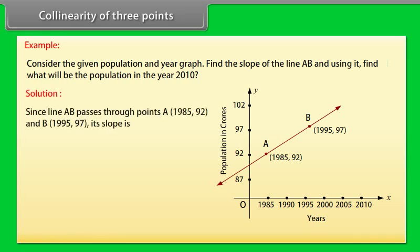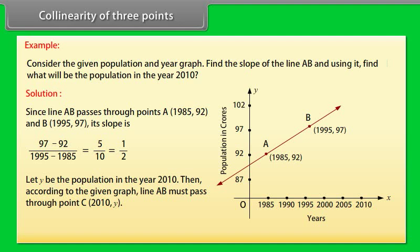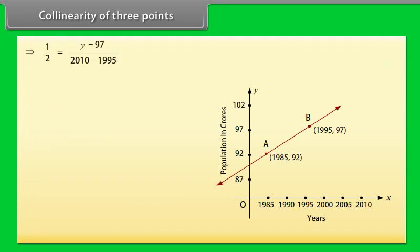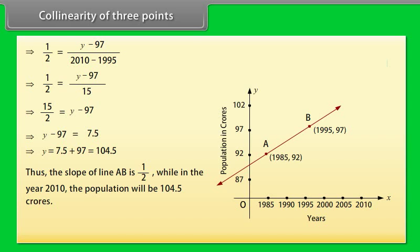Solution: Since line AB passes through points A(1985, 92) and B(1995, 97), its slope is (97 − 92)/(1995 − 1985) = 5/10 = 1/2. Let Y be the population in the year 2010. Then line AB must also pass through point C(2010, Y). Therefore slope of AB = slope of BC: 1/2 = (Y − 97)/(2010 − 1995). On solving, Y = 104.5. Thus the slope of line AB is 1/2, and in the year 2010 the population will be 104.5 crores.